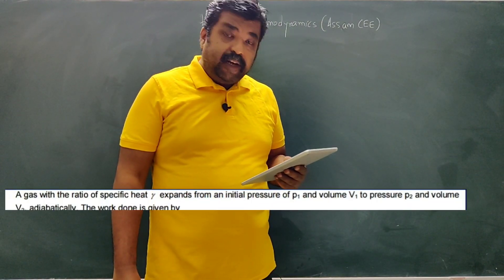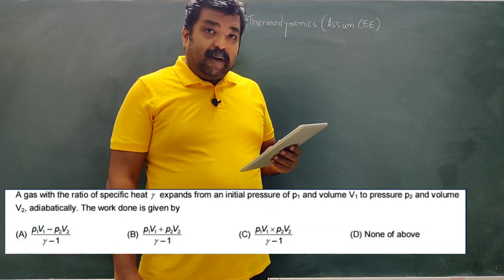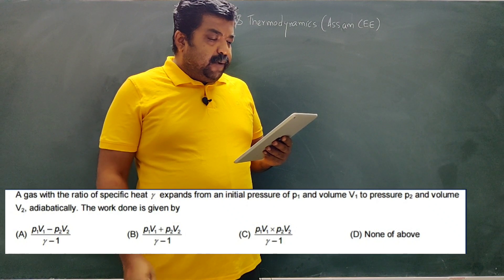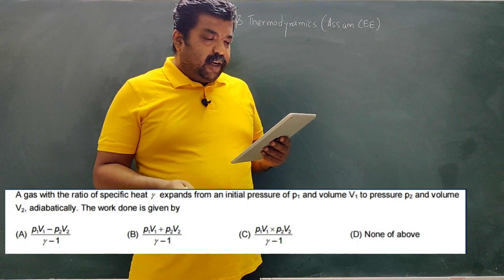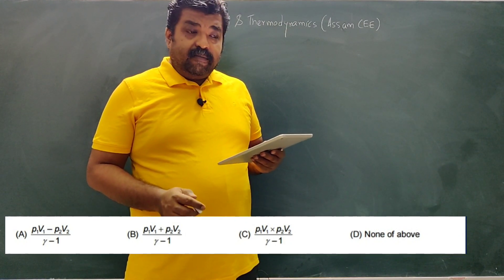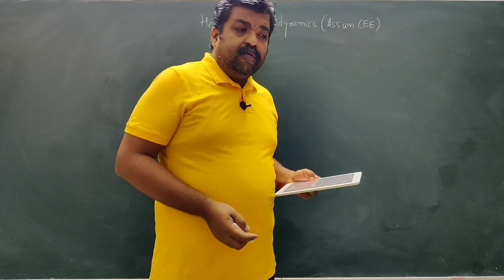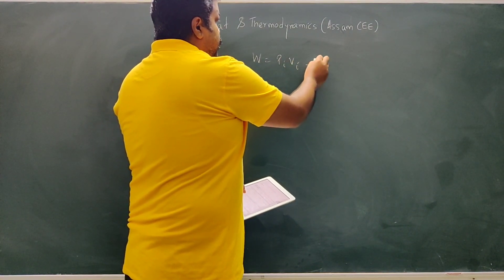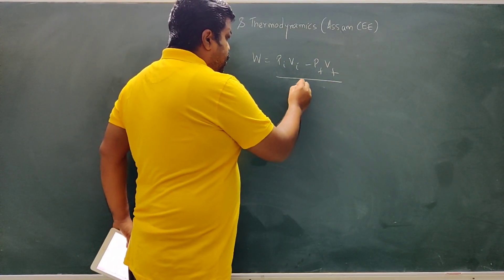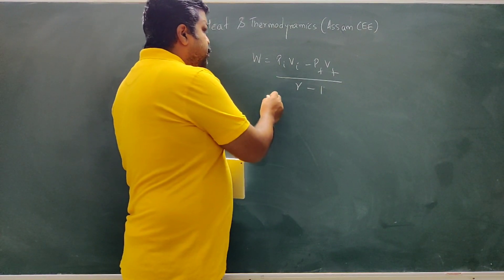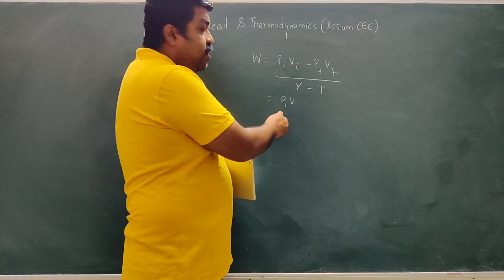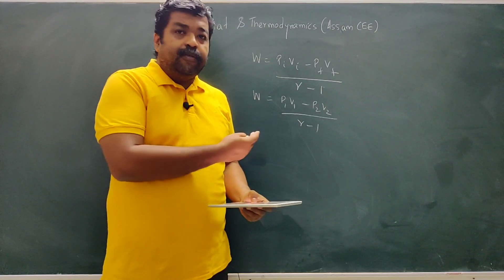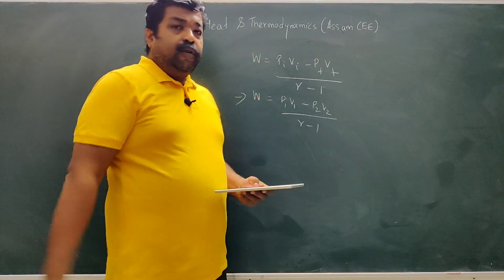The next question is Assam C 2018. A gas with ratio of specific heats γ = CP/CV, the adiabatic gas constant, expands adiabatically from initial pressure P1, volume V1 to final pressure P2, volume V2. The work done in an adiabatic process is W = (P1V1 − P2V2) / (γ − 1).